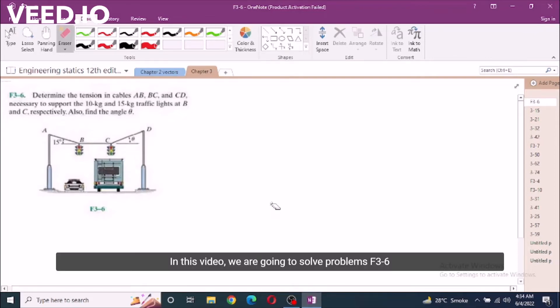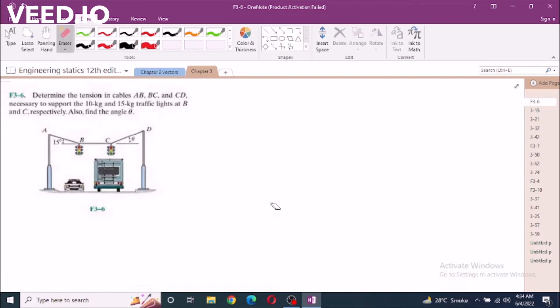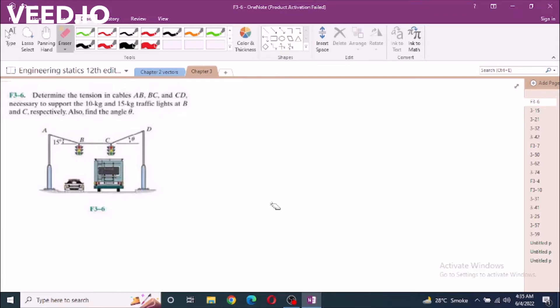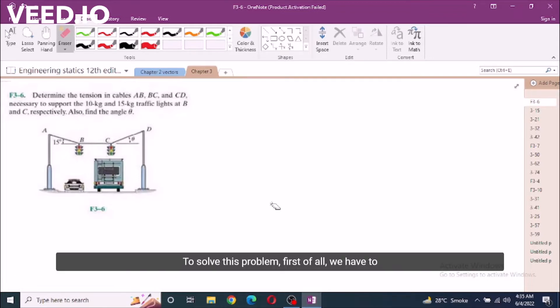In this video, we are going to solve problem F3-6 from R.C. Hibbeler, Engineering Statics 12th edition. According to this problem, determine the tension in cables AB, BC, and CD necessary to support the 10 kg and 15 kg traffic lights at B and C respectively. Also find the angle theta. To solve this problem, first of all, we have to draw the free body diagram of point B and C.